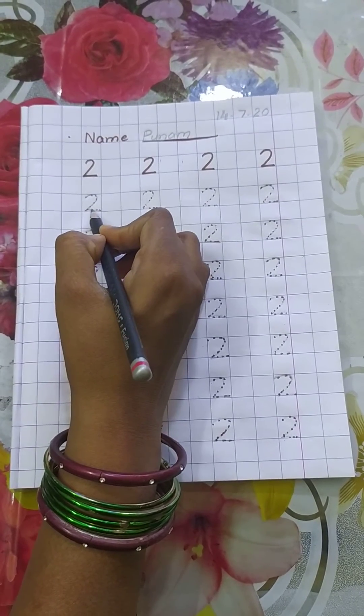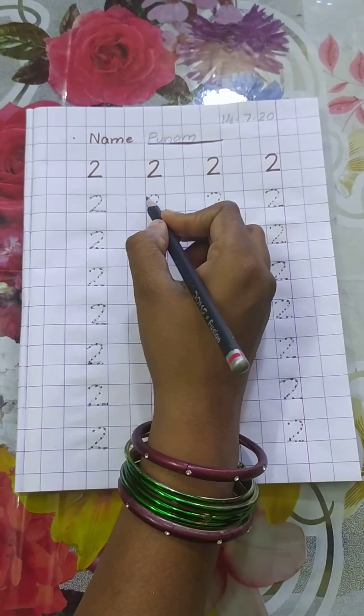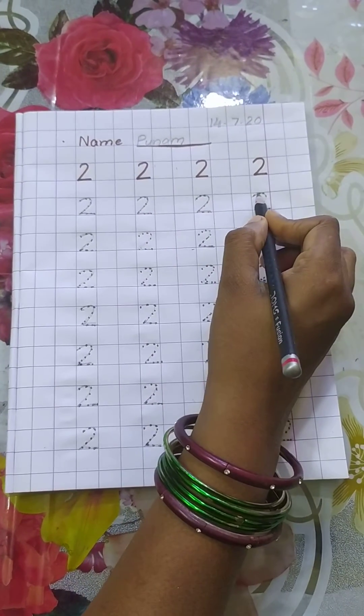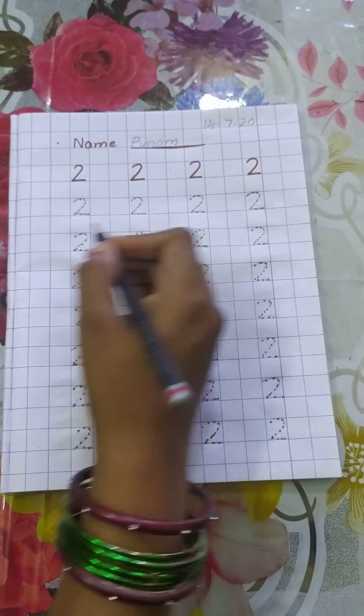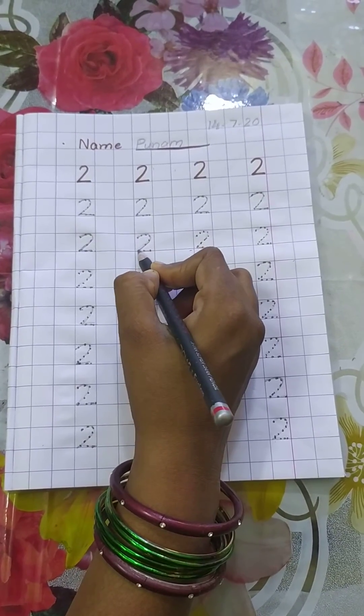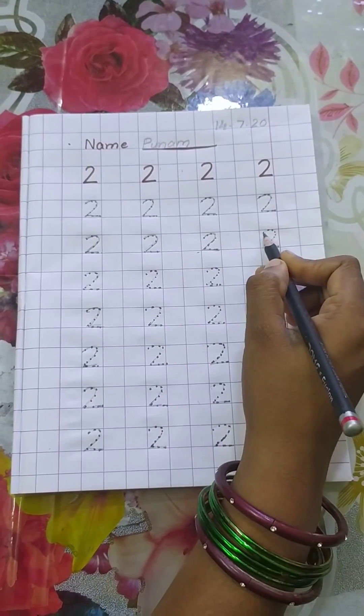Join all the dots and write the number 2. Touch the full box and write the number 2 like this.